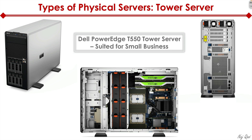At the front of the computer, we have a couple of USB ports and a power button. On the back side, we have a power outlet, a VGA or HDMI cable that connects to the monitor, and a couple of network Ethernet jacks — network interface cards that allow us to connect to the network. That's what we have in a tower server.